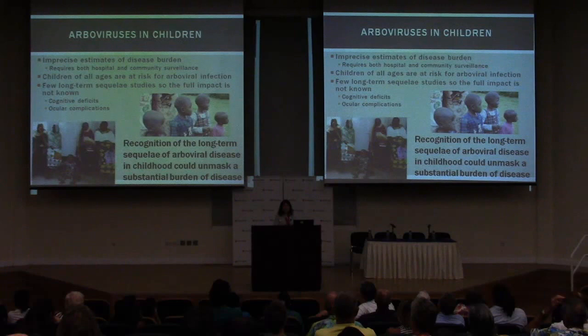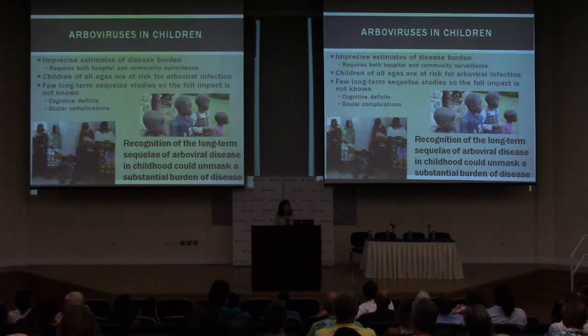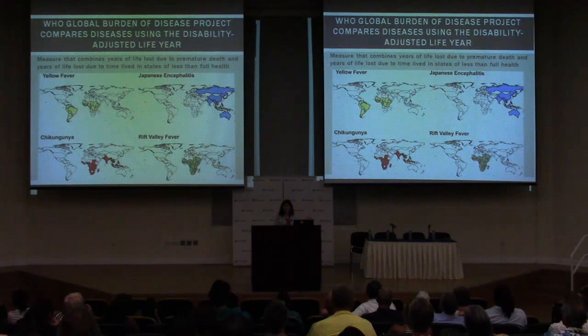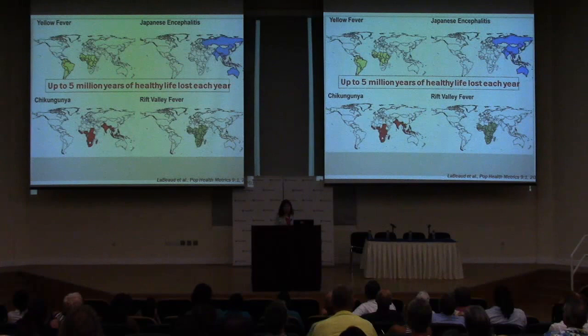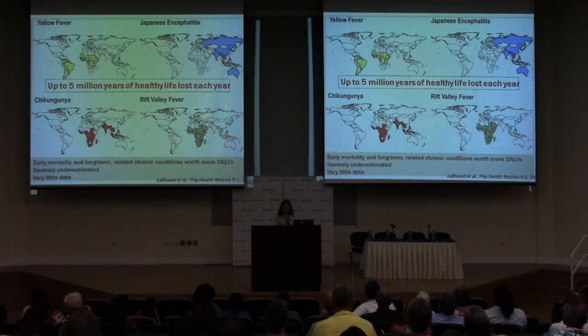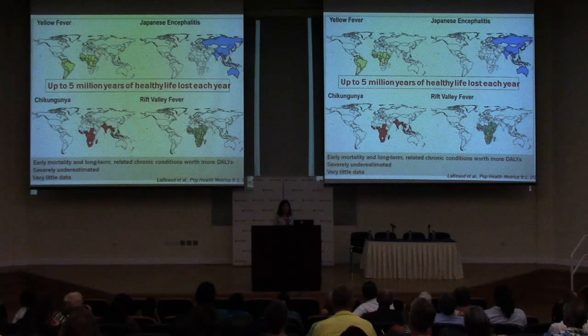The Global Burden of Disease project compares communicable and non-communicable diseases to rate how severe they are. The initial GBD forgot to include arboviruses, so we did our own GBD project looking at yellow fever, Japanese encephalitis, chikungunya, and Rift Valley fever. We found that up to about five million years of healthy life were lost each year due to these infections — not just from the week-long fever but from early mortality and long-standing consequences like chronic arthritis.